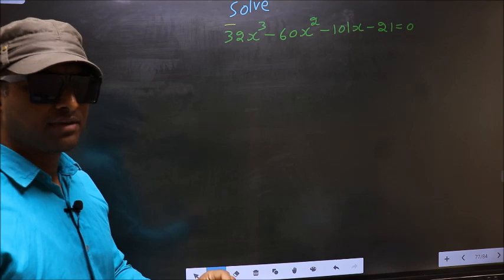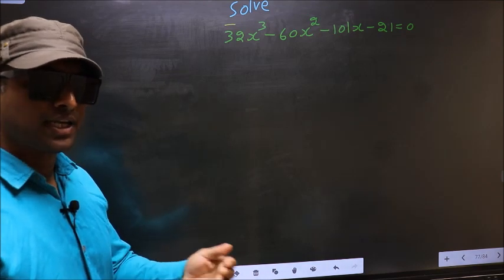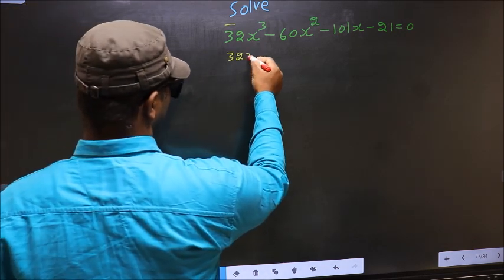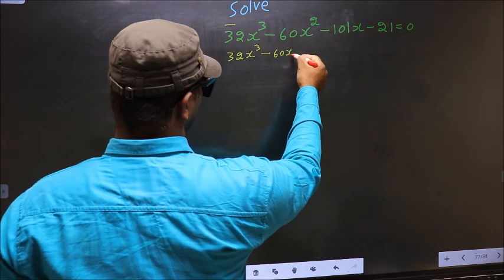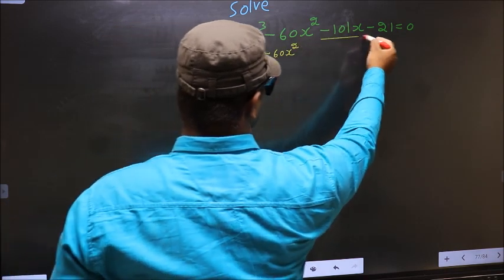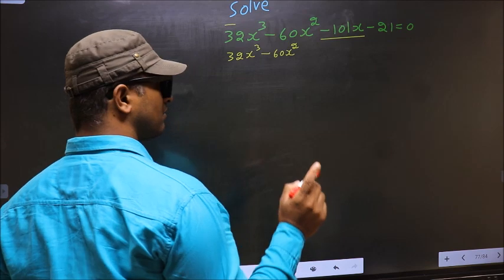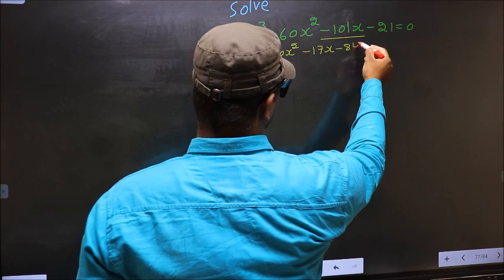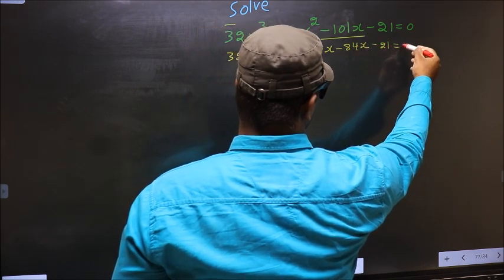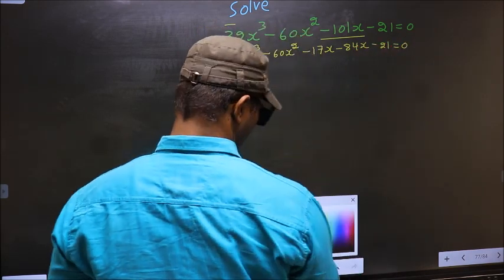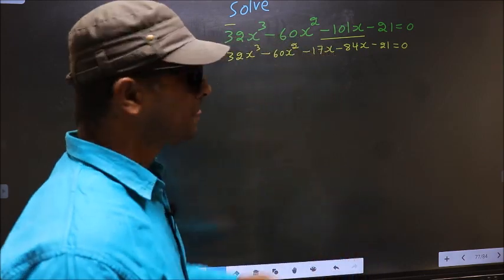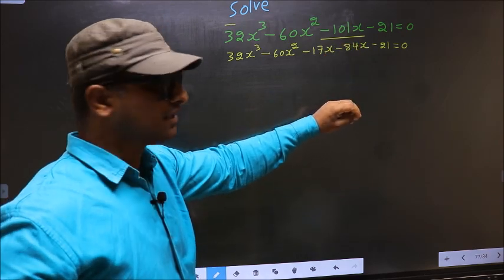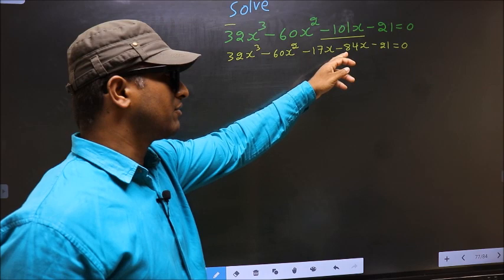For that, we have to change the x term. In place of minus 101x, I write minus 17x minus 84x. So the expression becomes 32x³ minus 60x² minus 17x minus 84x minus 21 equal to 0.